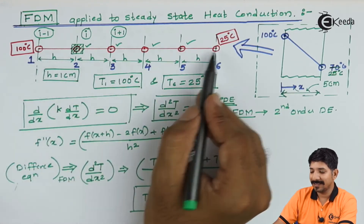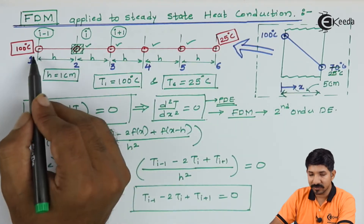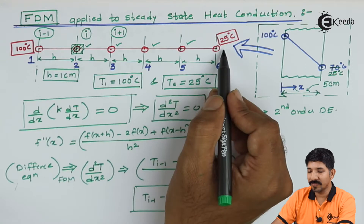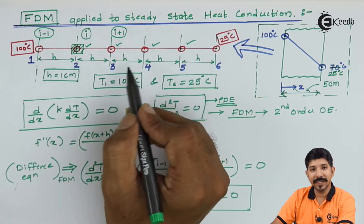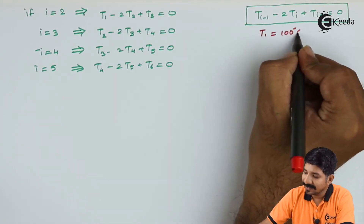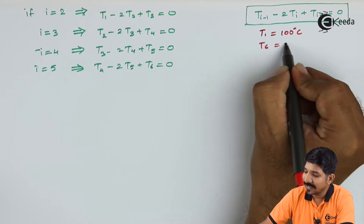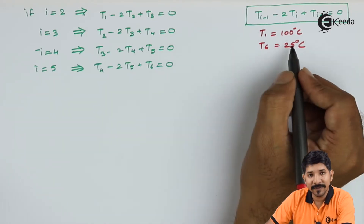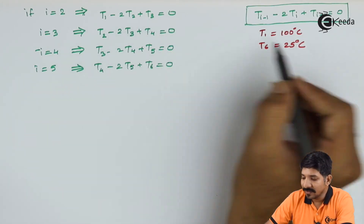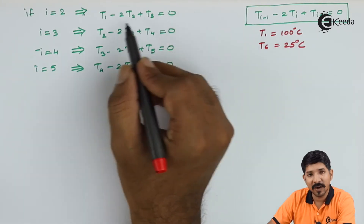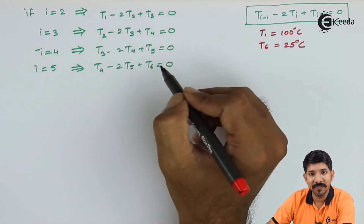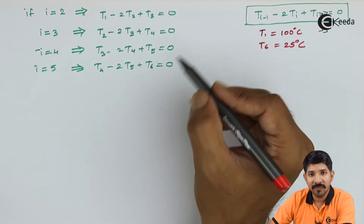We cannot write the equation for nodes 1 and 6, because i-1 for the first node is not known, and i+1 for the last node is not known. So for the two extreme nodes we cannot apply the equation, but for all intermediate nodes we can. We know T1 = 100 degree Celsius and T6 = 25 degree Celsius. We can either solve the equations directly or form a matrix, but we are solving directly to understand the finite difference method for steady state heat conduction.